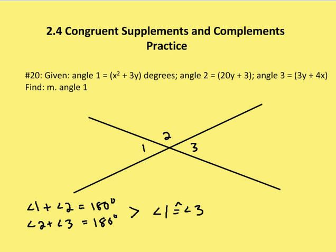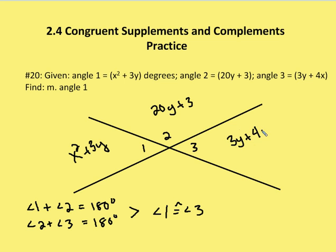In the first problem, we have two of them. In the first one, we're given angle 1 is equal to x squared plus 3y. We're given that angle 2 is equal to 20y plus 3, and angle 3 is equal to 3y plus 4x. We're asked to find the measure of angle 1.